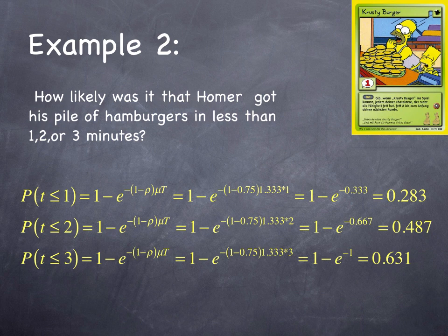Now again, this is a Krusty the Clown example, but this is the same math that you would do to figure out what is the likelihood that a toll plaza is occupied or free, for instance, or a ramp is occupied or free.